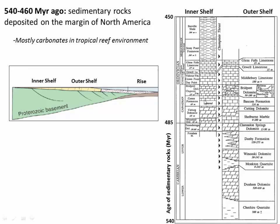We can see that stratigraphy over here in this combined stratigraphic column. Rocks from the inner shelf include a lot of dolostones, then a lot of limestones, and then eventually some shales. Rocks that were on the outer shelf are pretty much the same thing except these are more heavily metamorphosed — so we've got some dolomites, some marbles, and things like that. All this stuff was deposited on the passive margin of Laurentia or North America about 540 to 460 million years ago.